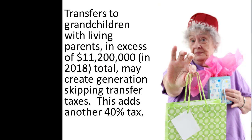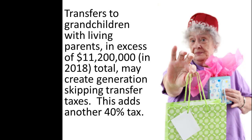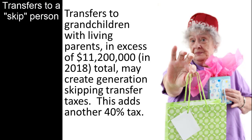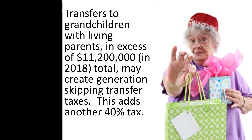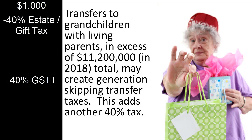An additional tax, referred to as the generation-skipping transfer tax, can arise if the taxpayer makes transfers that skip a generation. For example, if a grandparent makes a gift, either during life or at death, to the child of his or her living child, this transfer skips a generation. The amount of these generation-skipping transfers that, when combined, exceeds the exemption-equivalent amount will generate an additional 40% tax. This exemption-equivalent amount was $11,200,000 in 2018. This 40% generation-skipping transfer tax is applied to the amount remaining after application of the 40% estate and gift tax.